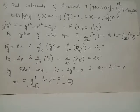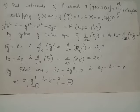Dou F by dou y, which is F_y, equals 2z. Then d by dx of F_y dash is d by dx of 2y dash, since dou F by dou y dash equals 2y dash. So d by dx of 2y dash equals 2y double dash. Similarly, F_z equals 2y, and d by dx of F_z dash equals d by dx of 2z dash, which equals 2z double dash.